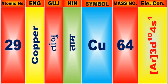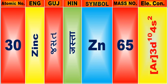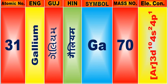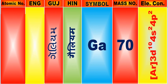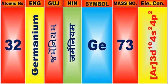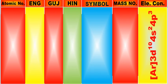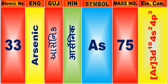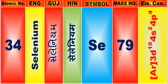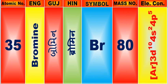Atomic number is 29, name of atom is Copper. Atomic number is 30, name of atom is Zinc. Atomic number is 31, name of atom is Gallium. Atomic number is 32, name of atom is Germanium. Atomic number is 33, name of atom is Arsenic. Atomic number is 34, name of atom is Selenium. Atomic number is 35, name of atom is Bromine.